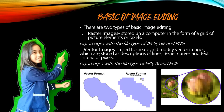Basics of image editing. There are two types of basic image editing. 1. Raster images: stored on a computer in the form of a grid of picture elements or pixels. Images with a file type of JPEG, GIF, and PNG.